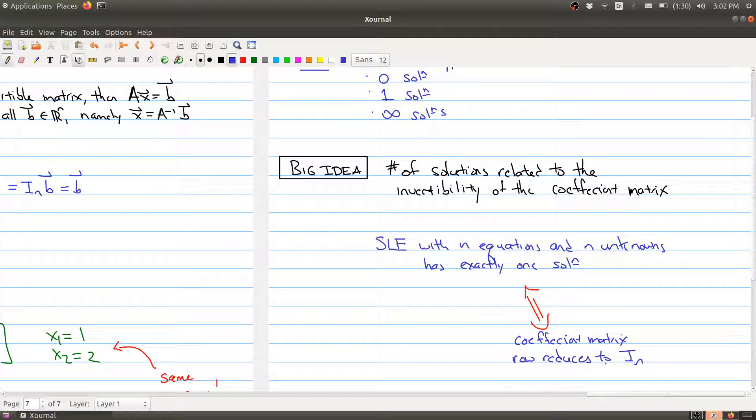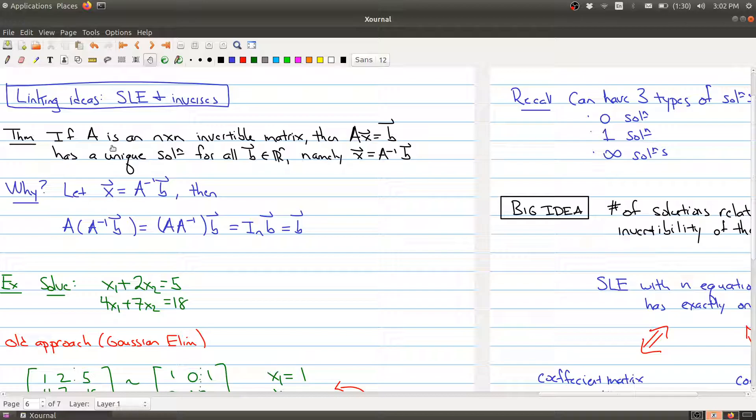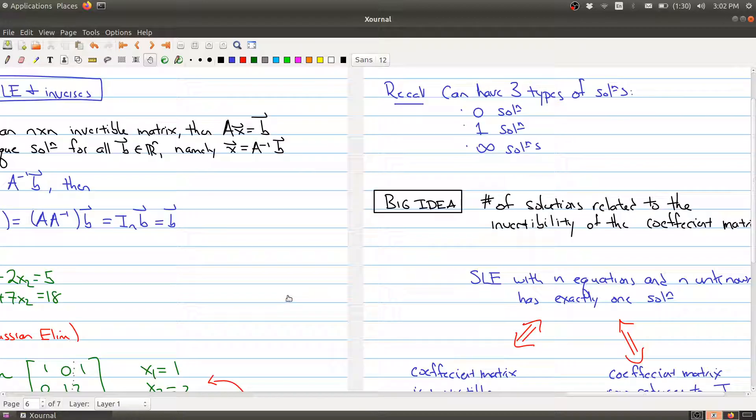So it will have exactly one solution if this case happens here. The coefficient matrix reduces to the identity. But now using our new terminology, there's another way of thinking about this. And this new way of thinking about this is that the coefficient matrix is invertible. And that's another way of explaining what's happening over here in this theorem. If you have an invertible matrix, then it only has one solution.